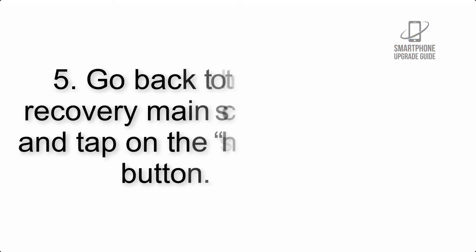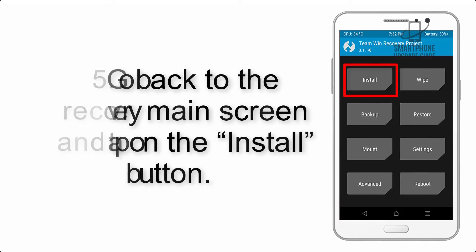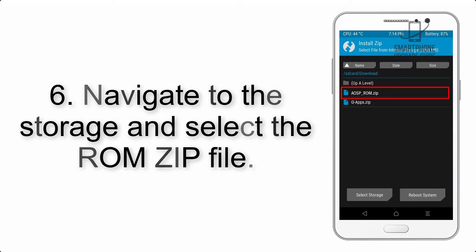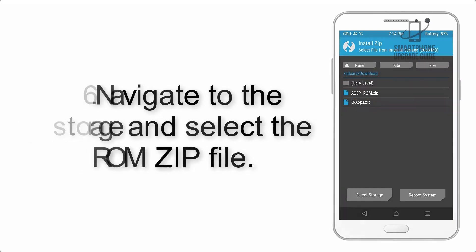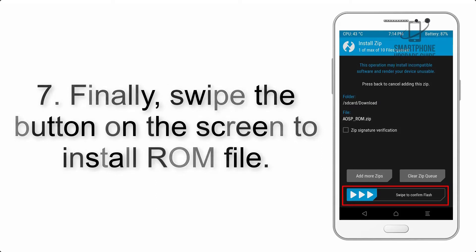Step 4: Swipe the button to wipe the device. Step 5: Go back to the recovery main screen and tap on the Install button. Step 6: Navigate to the storage and select the ROM zip file.